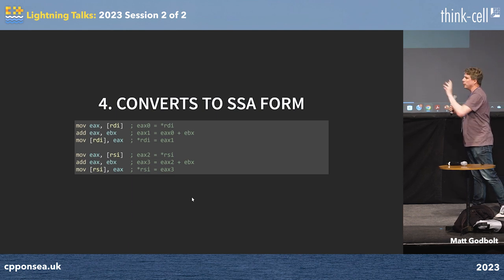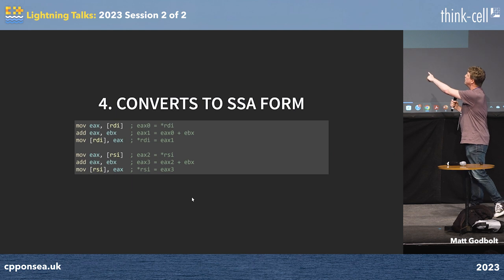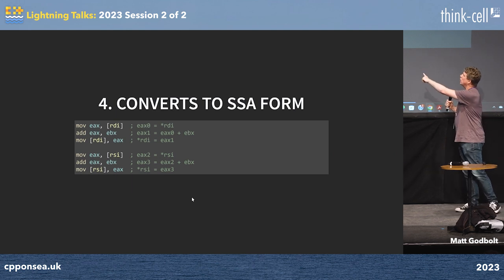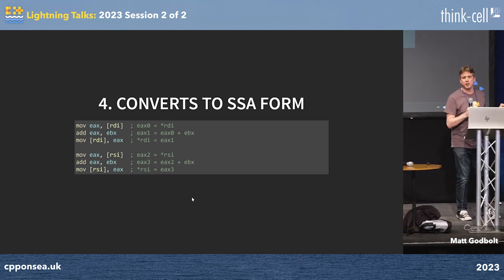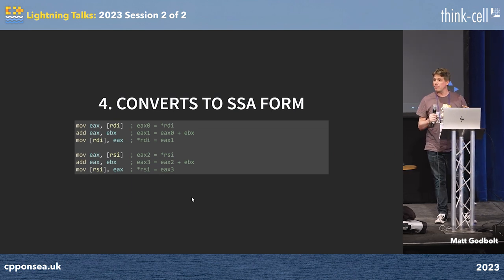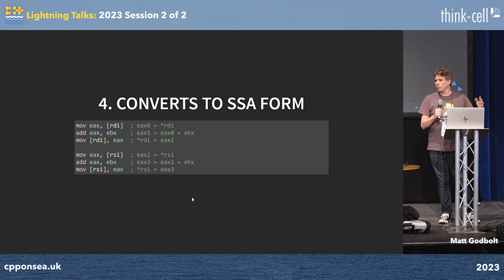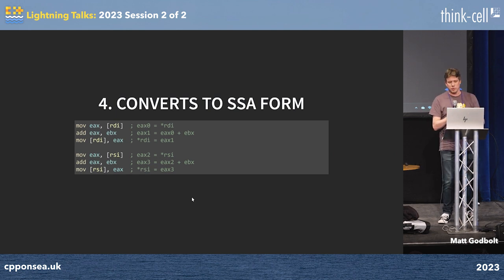So EAX0 is like a made-up register, and now the second iteration can actually run at the same time as the first iteration — even though they're using the same registers, the CPU can rename them, giving them new variable names effectively, and lets them run concurrently.